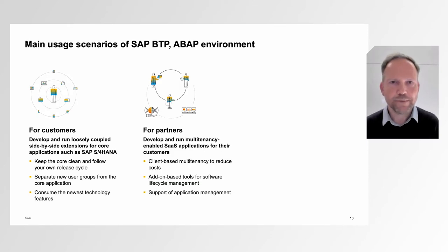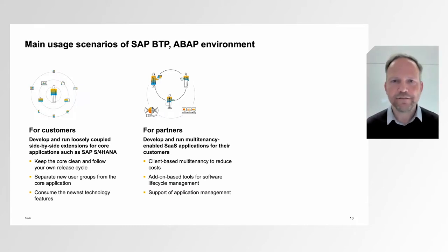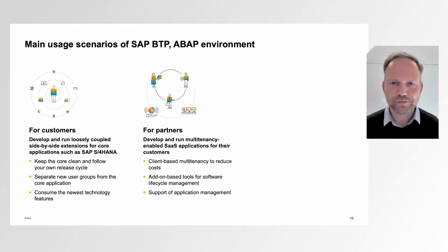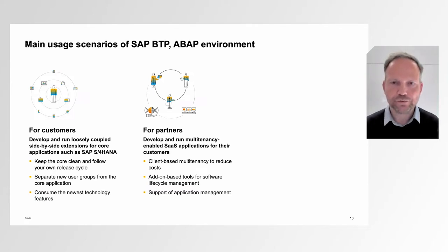The second important main usage scenario is for partners. Partners have additional requirements because they need to develop and run multi-tenancy enabled SaaS applications for their customers. They need multi-tenancy in order to reduce infrastructure costs, and they also need additional tools for lifecycle management and application management — all of which are provided by Steampunk.